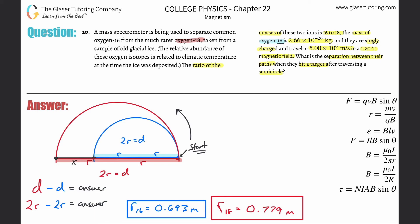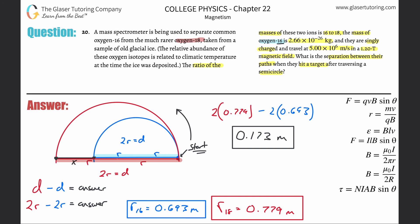To find the answer, we take two times the radius of oxygen-18 (0.779 m) and subtract two times the radius of oxygen-16 (0.693 m): 2×0.779 − 2×0.69271... Using the exact calculator values, the answer comes out to 0.173 meters. That is the distance of separation. In other units, that's roughly 17.3 centimeters or 173 millimeters.